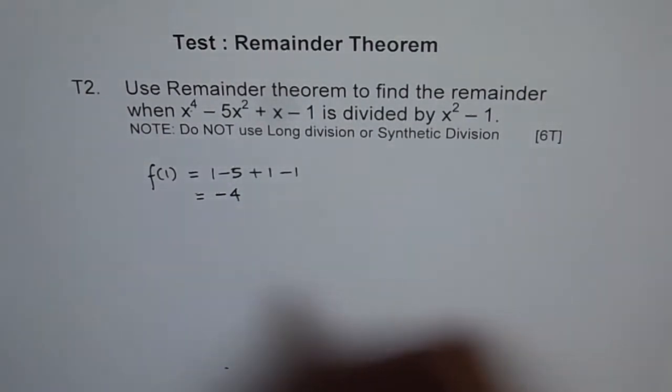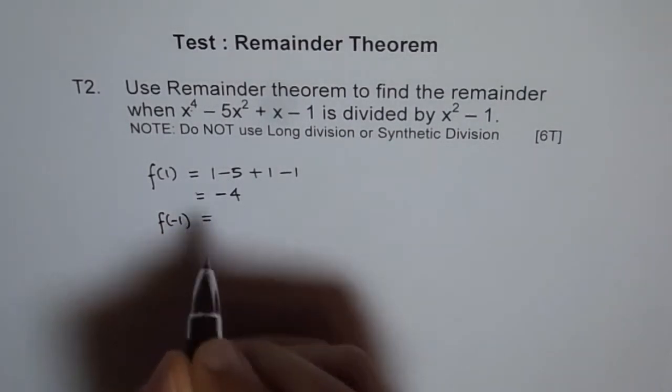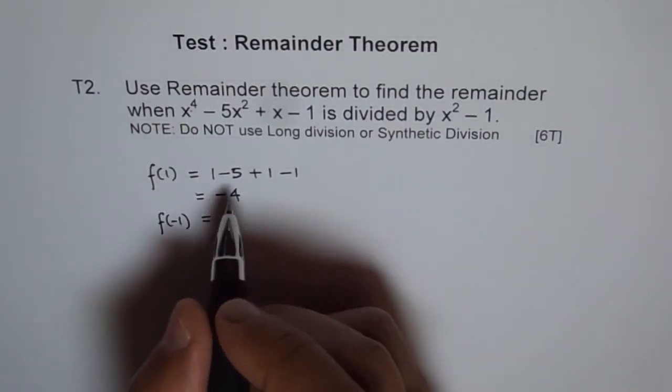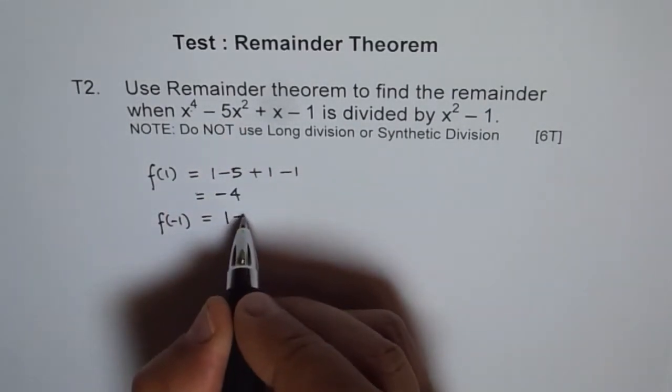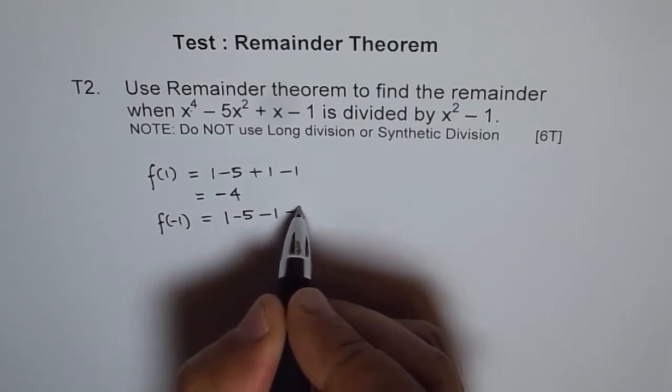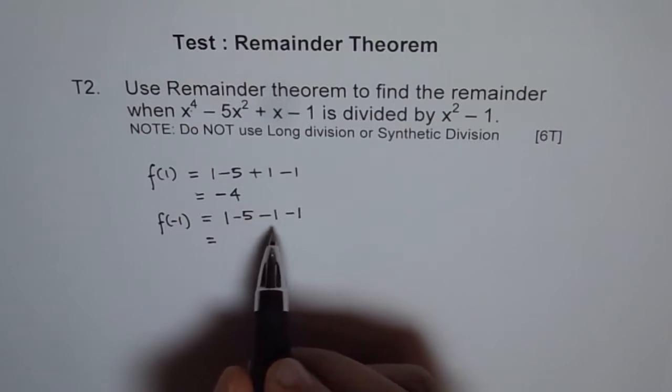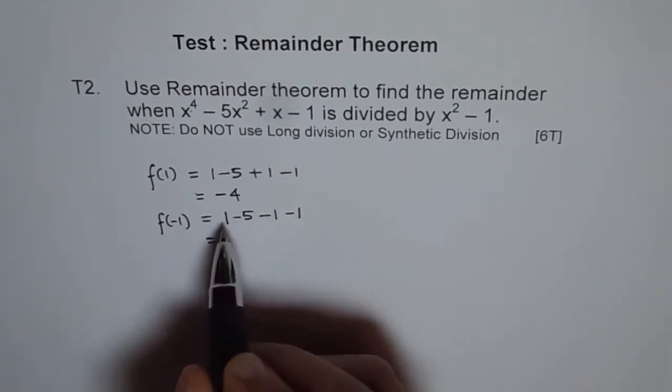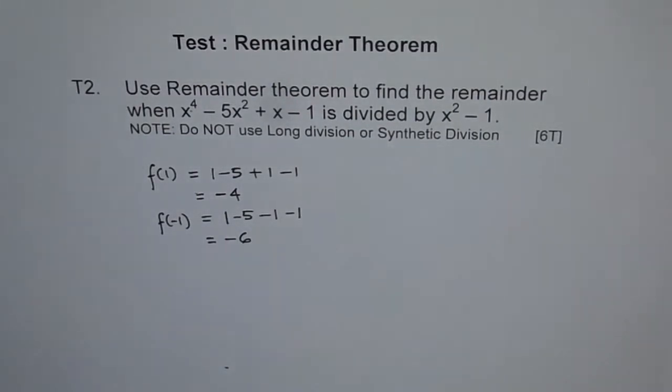Let's also find f of minus 1. Minus 1 to the power 4 is plus, and this is also plus. So we get minus 5. Here however, we get minus 1 and then minus 1. So f of minus 1 for us is minus 7 and 1, so minus 6. These are our values.